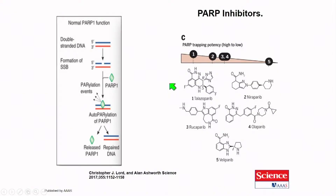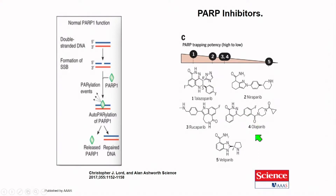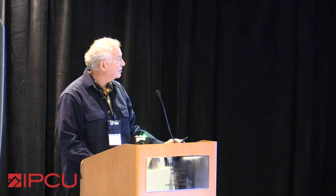PARP inhibitors were developed to interrupt this pathway. In normal PARP1 function, a single-strand break triggers PARylation events leading to repair. PARP inhibitors prevent that repair. A number of small molecule inhibitors have been developed this way. We'll focus on olaparib, which has been studied most in prostate cancer, though the inhibitors vary in their PARP-trapping potency. All of them are being studied and have been approved in some other cancers.